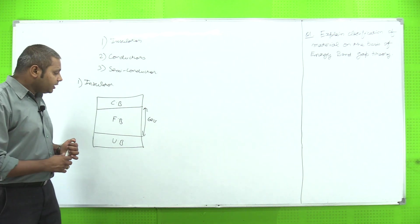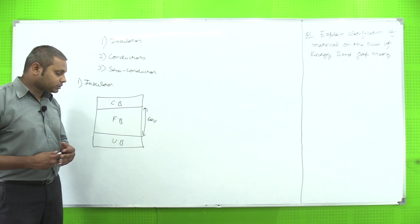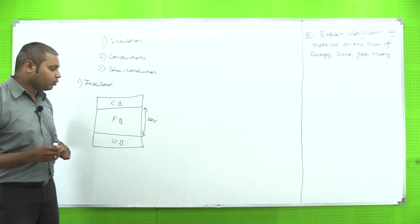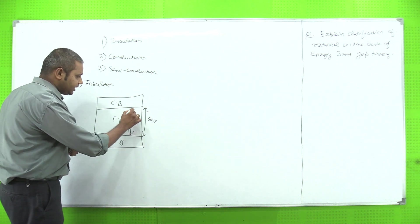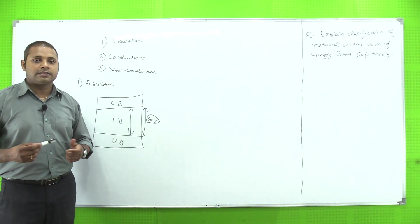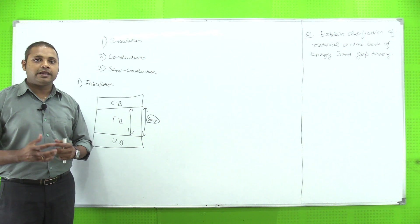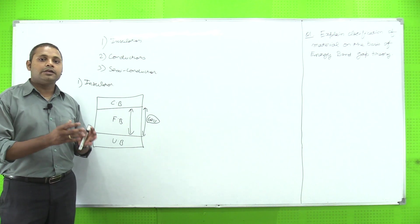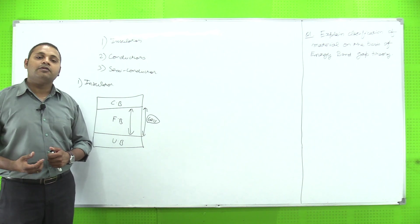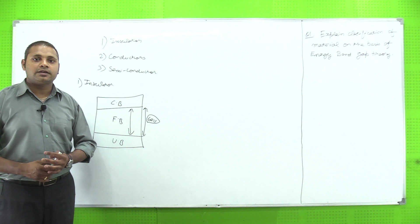It means it is a gap that if we provide external energy to insulators, then in that case electrons will not jump from the valence band to the conduction band. Because this region or this area is 6 electron volt, which is very large. In the case of insulators, may be the possibility when the insulator changes its state - it may be a solid and when we heat it up, it may get converted into liquid or liquid get converted into gas. So the possibility is that it will start conducting.